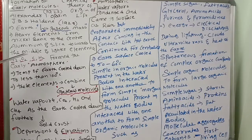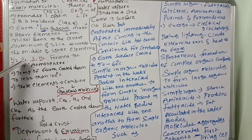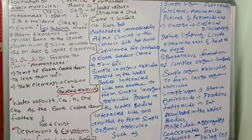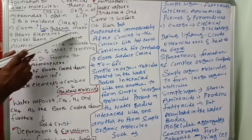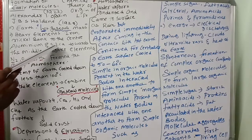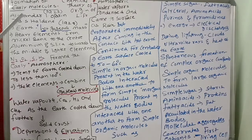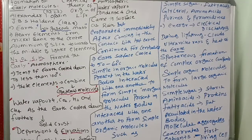First, the heavy elements iron and nickel sank to the center. Aluminium and silica moved towards the middle. Lighter elements — nitrogen, oxygen, carbon, hydrogen — formed the early atmosphere. Remember these names: iron, nickel, aluminium, silica, nitrogen, oxygen, carbon, hydrogen formed the early atmosphere. This point you should have to remember.